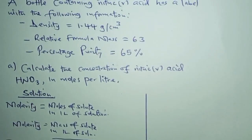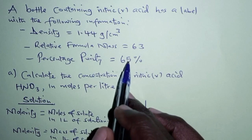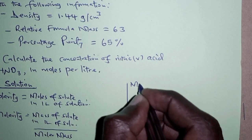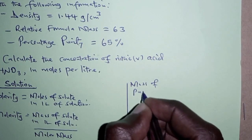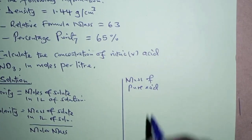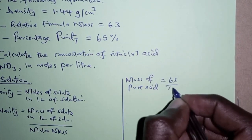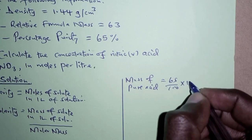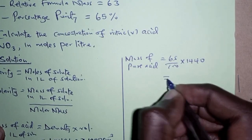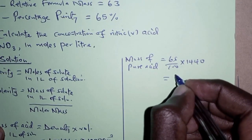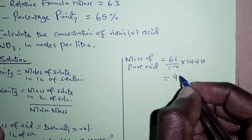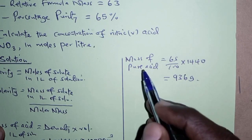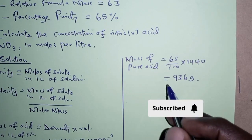We are also told that the percentage purity is 65%. That means the mass of pure nitric acid is 65% of the total mass — that is, 65 over 100 times 1440. From the calculator, this gives 936 grams, which is the mass of pure nitric acid in the solution.